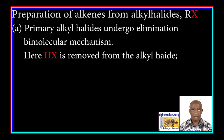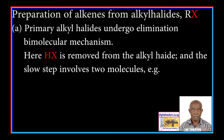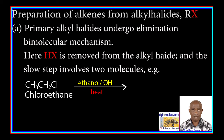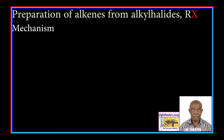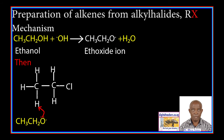In E2 elimination, HX is removed from the alkyl halide and the slow step involves two molecules. For example, chloroethane reacts with hot alcoholic potassium hydroxide to form ethene. In the mechanism, ethanol reacts with KOH to form an ethoxide ion. The ethoxide ion removes a hydrogen atom from the carbon next to the one carrying the chloride atom.